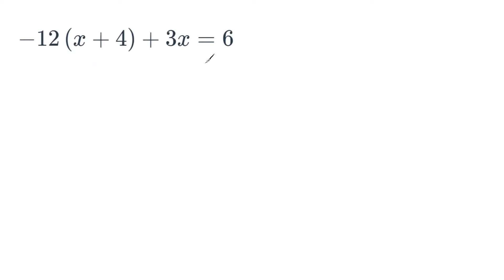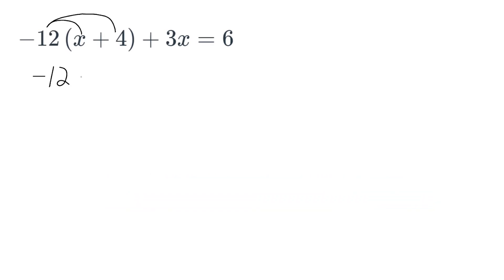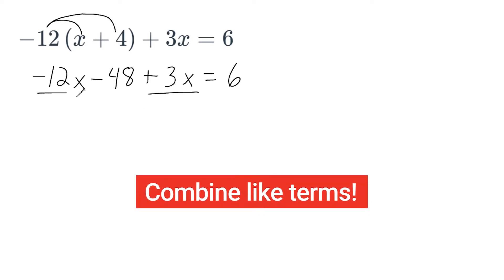Now in this problem we have an equation that can be simplified before we solve. Whenever you see a number on the outside of parentheses with no sign in between, we are dealing with multiplication. We are multiplying negative 12 by everything inside the parentheses. So we distribute negative 12 to x and to positive 4. Negative 12 times positive x is negative 12x. Negative 12 times positive 4 is negative 48, so we write minus 48. Then we write the remainder of our equation: plus 3x equals 6. We can simplify further by combining like terms — negative 12x and positive 3x — which gives us negative 9x.